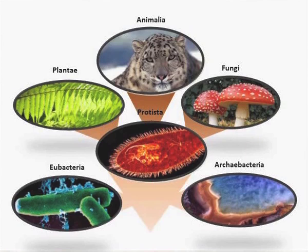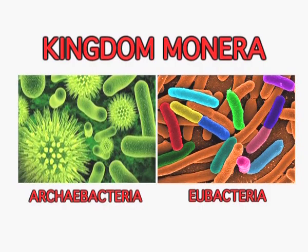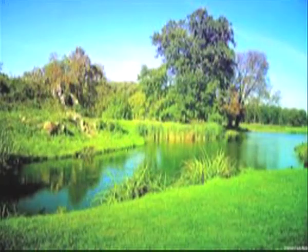Later it was also found that since these prokaryotic bacteria were the first ones to exist on this Earth, they were known as archaebacteria and they included two groups — one was archaebacteria and the other was eubacteria. The eubacteria are the true bacteria, while archaebacteria are the primitive ones that can survive under extreme conditions of the environment.